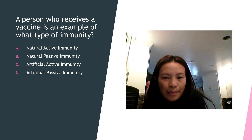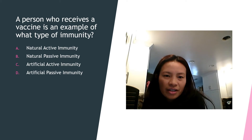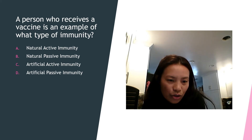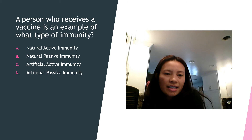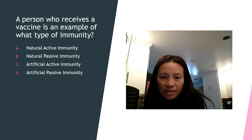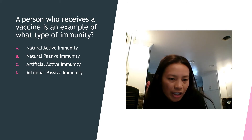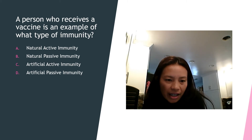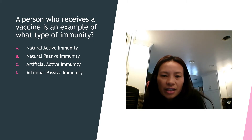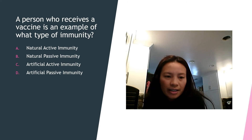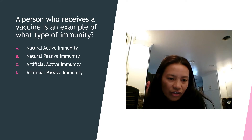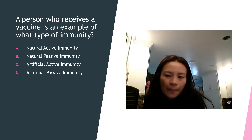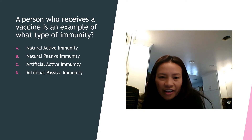Letter A, natural active immunity — an example is contracting hepatitis A and producing anti-hep A antibodies. Letter B, natural passive immunity — an example is babies receiving breast milk. Letter D, artificial passive immunity — an example is injection of a prepared antibody. The answer is letter C — artificial active immunity, when a person receives a vaccine.